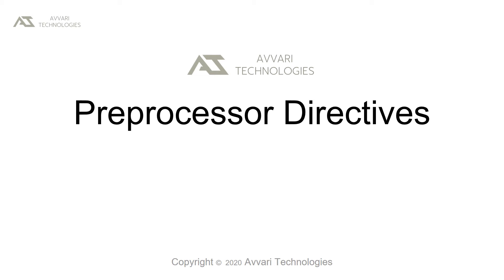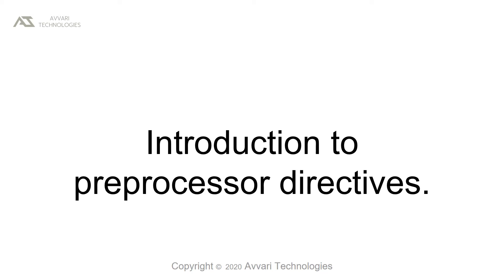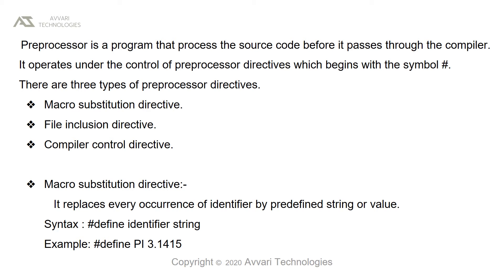Welcome to Avari Technologies. In this presentation we will study preprocessor directives. A preprocessor is a program that processes the source code before it passes through the compiler. It operates under the control of preprocessor directives, which begin with the symbol hash. There are three types of preprocessor directives: macro substitution directives, file inclusion directives, and compiler control directives.